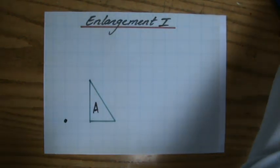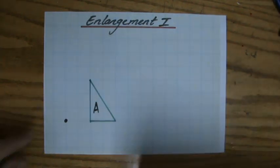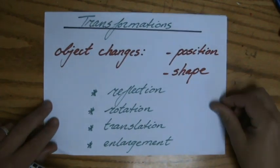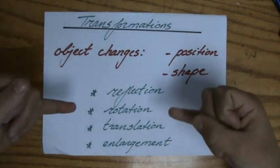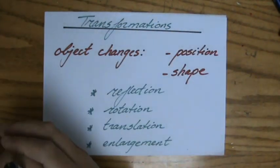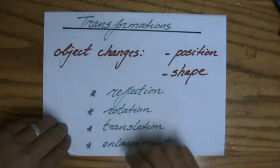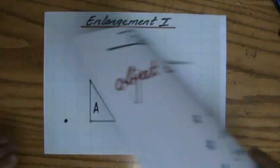Fantastic, it's time now to start talking about enlargements, a type of transformation you will encounter most likely a lot. We have done reflection, rotation, translations, now enlargements. A transformation in general changes the position or the shape of an object, for instance a triangle, and sometimes both.